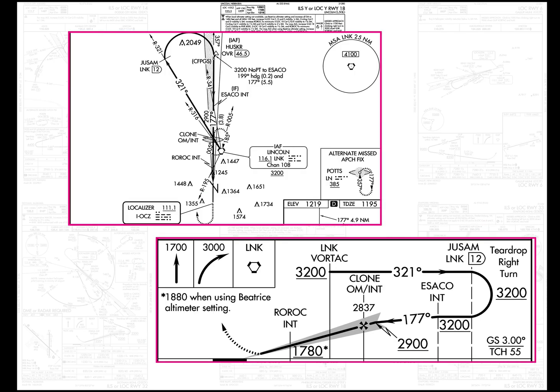The next example features a teardrop right turn. Here they have a computer navigation fix, CFPGS, right next to Husker — apparently identifying the end of the lobe, although that's not on the profile view. So these take a little thought process, and you don't want to be surprised by them — that's why you're here listening to this presentation.